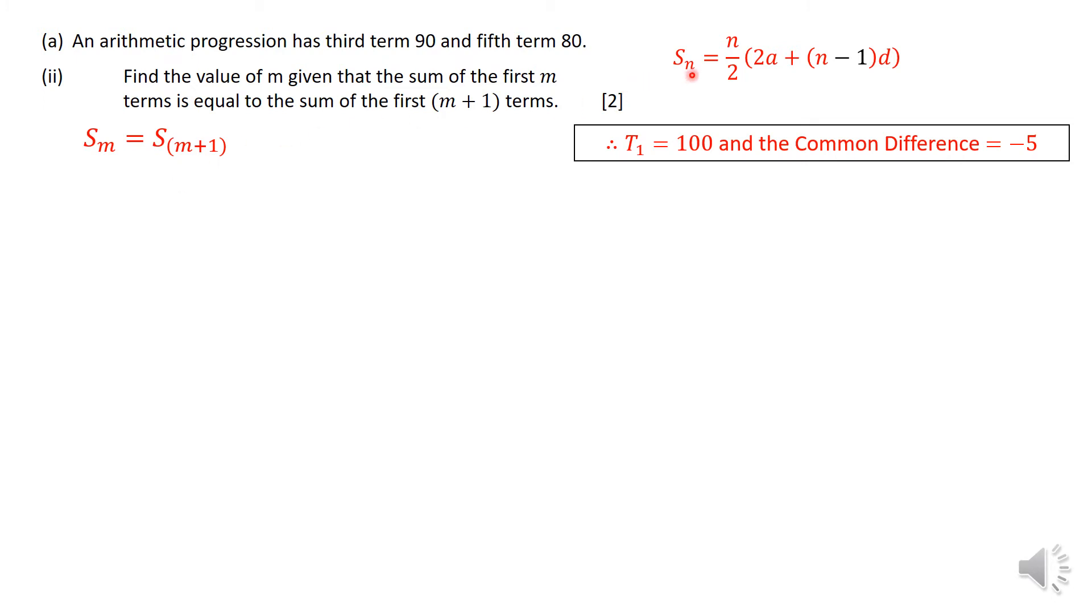The first term is 100, the common difference is negative 5. This is the most important part. If you get this part correct, then you are on the right path. Where I have an N, I'm going to substitute it with an M, and so on. This gives you this rather long expression or equation here.